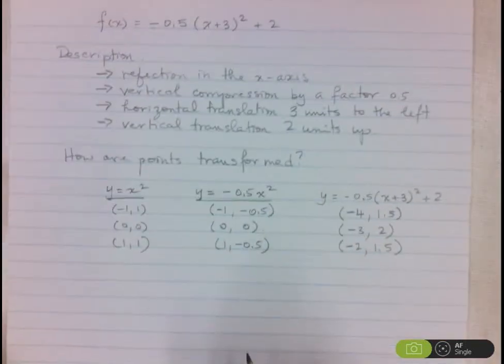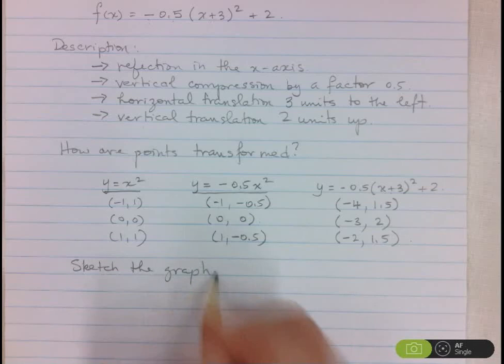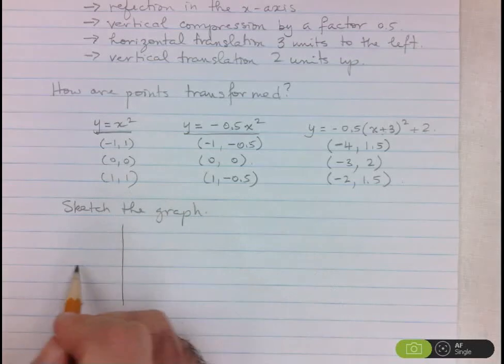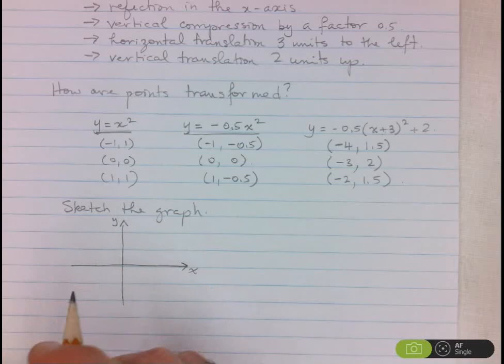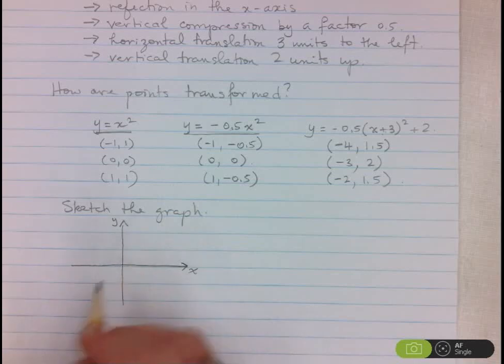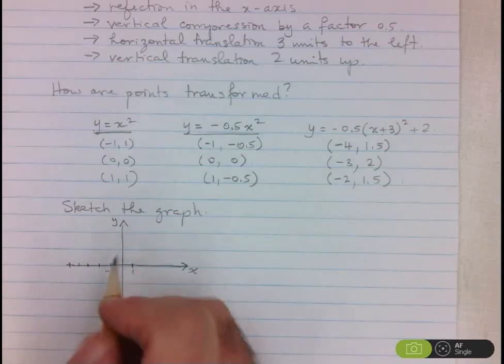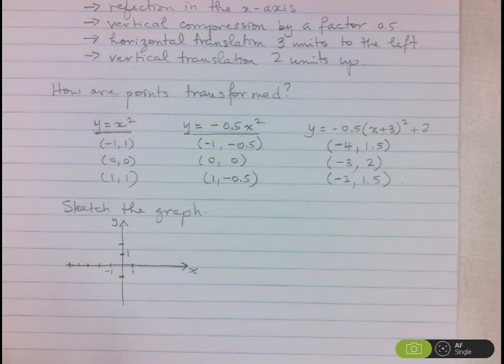And now we can sketch the graph of the function. So you can do this on graph paper or you can even just do it by hand just to get a sense of what the graph will look like. So let's always label our x and y axes. And I always need to see labels on the axes themselves. So here, I need to go to x equals negative 4. So here I'll put 1, negative 1, negative 2, negative 3, negative 4. Maybe go one more. And then up and down. Well, the most I need is 2, so I'll make this 1, 2. Make sure you label at least one of the ticks on the y-axis.